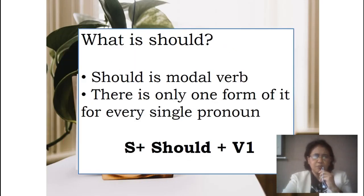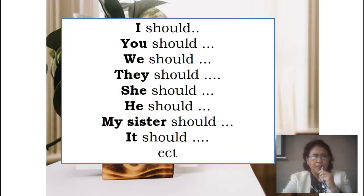'Should' is actually a modal verb. There is only one form of 'should' for every single pronoun. The pattern is: subject, followed by 'should', followed by the verb infinitive. For example: I should, you should, we should, they should, she should, he should, my sister should, it should, and so on.